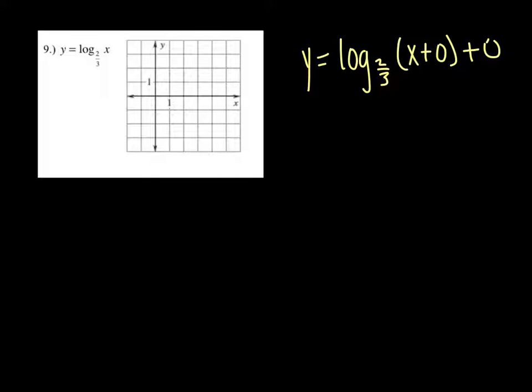For learning purposes, I rewrote this function for number 9 as log base 2/3 of (x + 0) + 0. Sometimes you will have a value here or here. In this case, you don't. But this value on the inside of your parentheses, that is your vertical asymptote. It's always opposite. Just like every other function, if it's in the heart of that function, on the inside of something or part of something, that moves things horizontally.